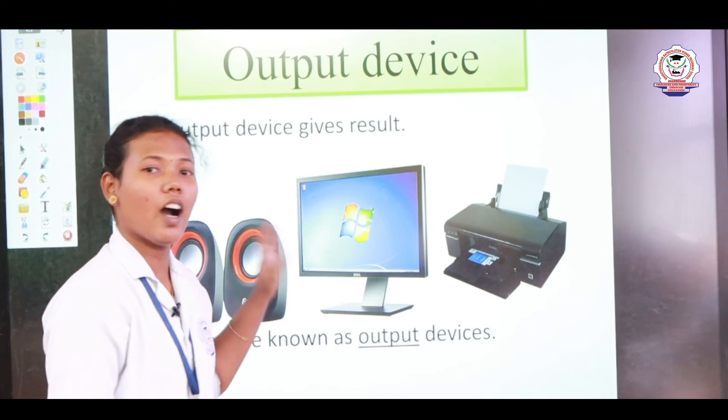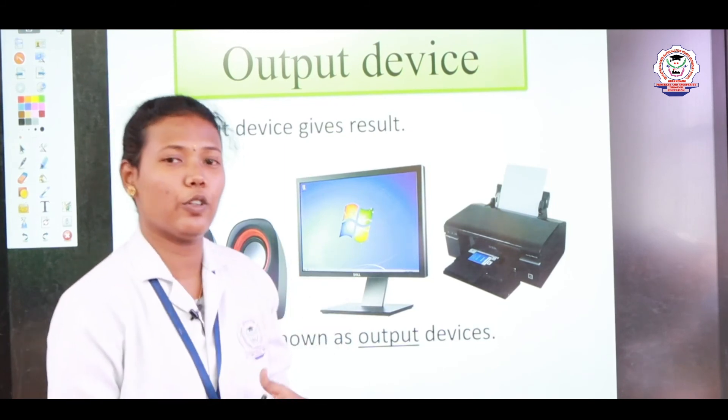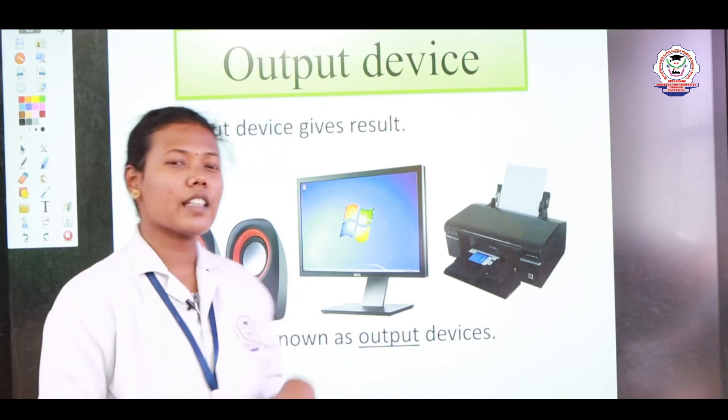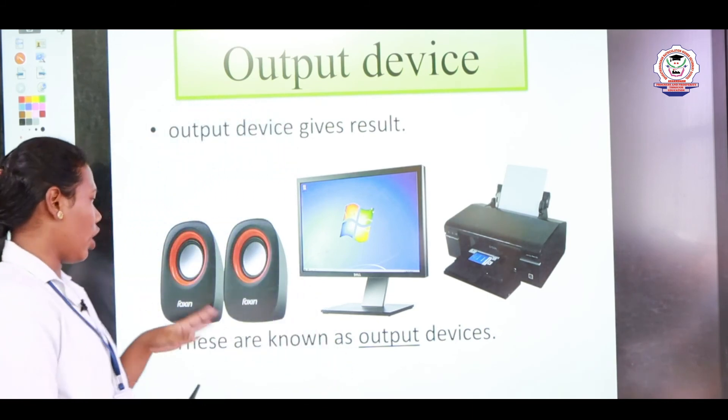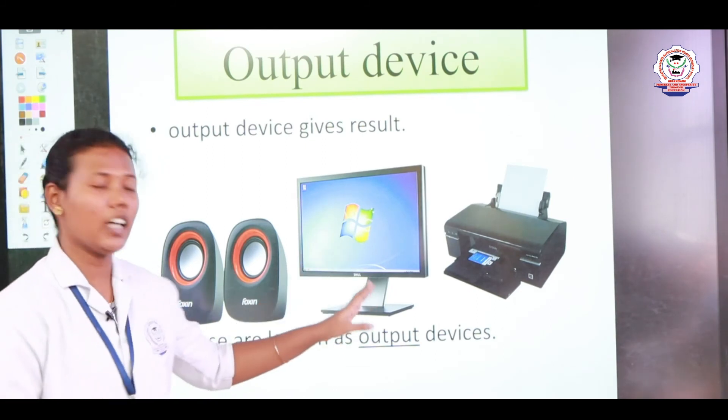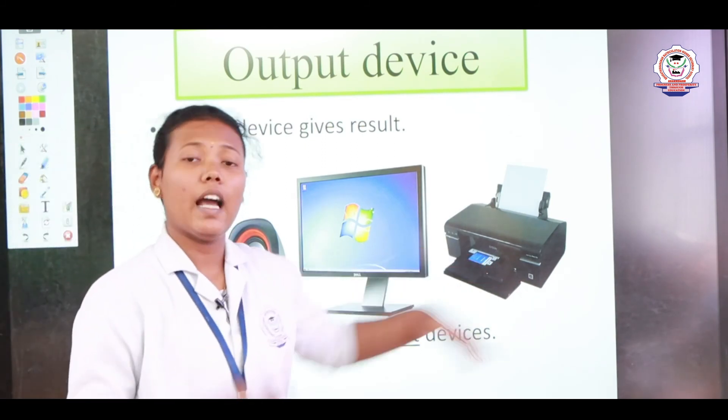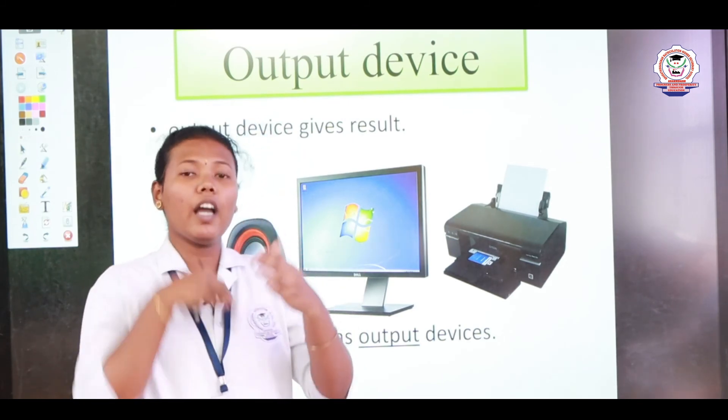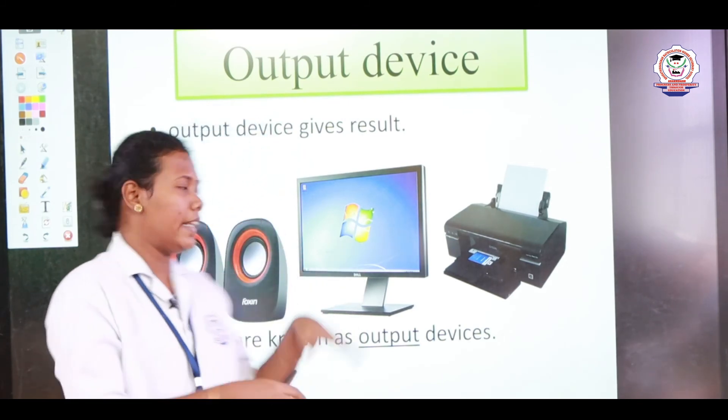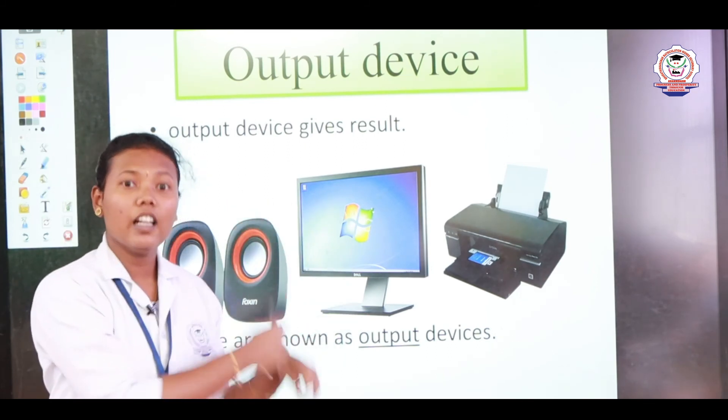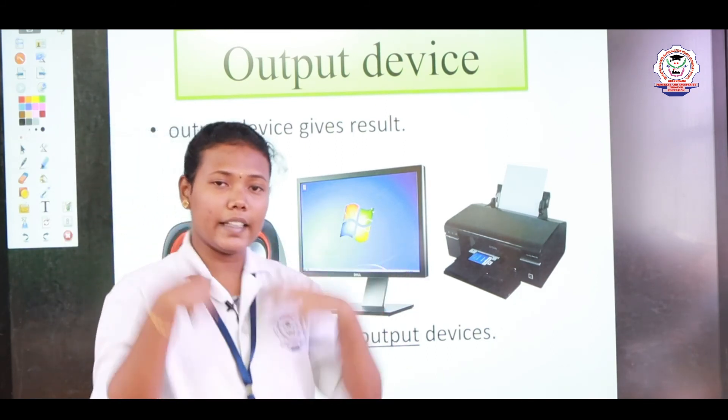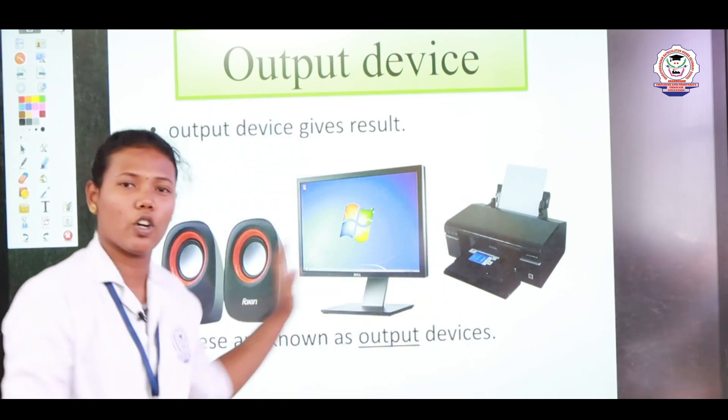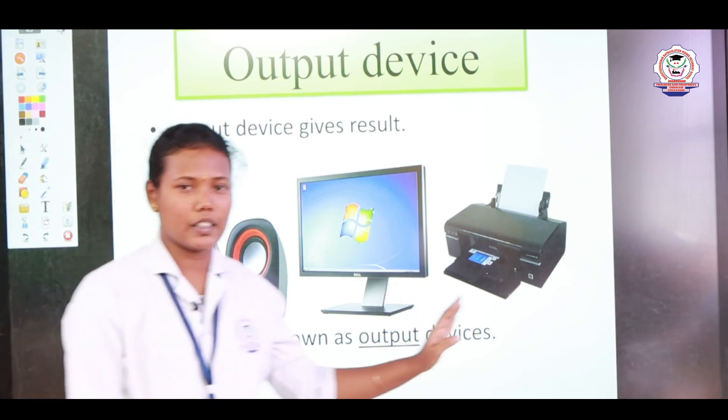Here is the output device. As I told you before, this output device helps us to give results. Some of the output devices are speaker, monitor, and printer. As I told you before, I am going to type my name - I am going to give an input and it will display on the monitor. And we can take a printout also. I can take my name as a printout on an A4 sheet. These are called output devices.